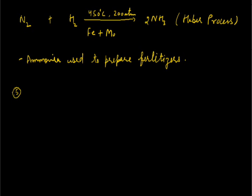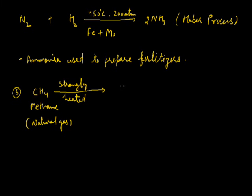Natural gas is also used as a source of carbon needed in tire industry. When natural gas, the component methane, is strongly heated, it decomposes to form carbon and hydrogen. This carbon obtained is called carbon black. This carbon black is used as filler in the manufacture of tires.